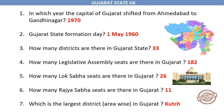In which year did the capital of Gujarat shift from Ahmedabad to Gandhinagar? 1970. Gujarat State Formation Day: 1st May 1960. How many districts are there in Gujarat State?